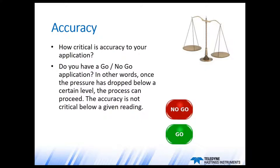The range selection is going to be very dependent upon number two on our list, which is accuracy. Higher accuracy vacuum gauges are generally going to cost more, so you want to ask yourself: how critical is accuracy to the application? For some applications, vacuum measurement is a matter of go/no-go — once the system has gone below a certain pressure, the process can begin. In these cases, accuracy below that level is not really critical.